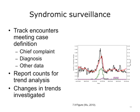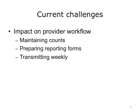Traditional disease surveillance generally relies on laboratory-confirmed cases, and the lag time between when patients first present symptoms and when they are tested and confirmed can take several days. This gap in time could result in potential lost opportunities for public health to intervene, contain, and control a communicable disease outbreak. One national example of syndromic surveillance employed by CDC is ILINET — a voluntary network of providers that track total encounters and encounters meeting the influenza-like illness case definition, all stratified by age. The main challenge with maintaining a voluntary syndromic surveillance system is that provider workflow can be significantly impacted by maintaining counts, stratifying by age, preparing data on report forms, and transmitting weekly.